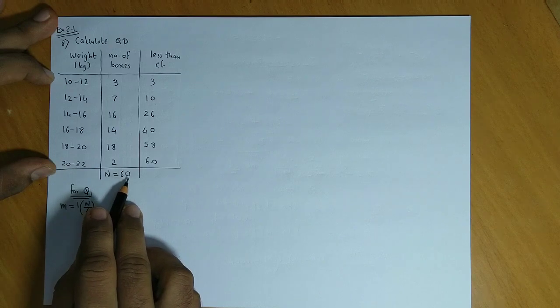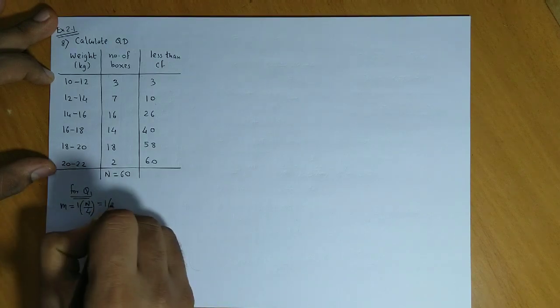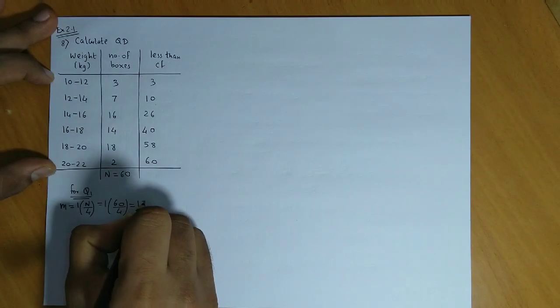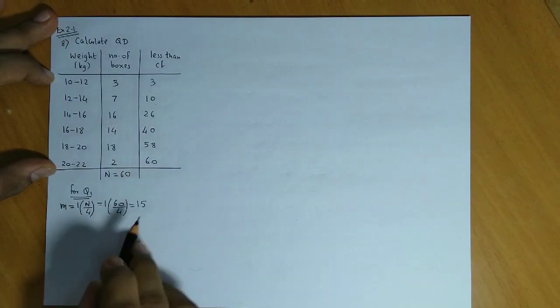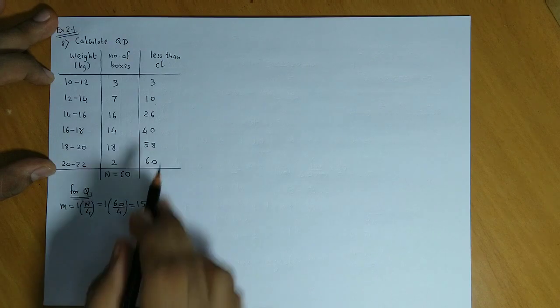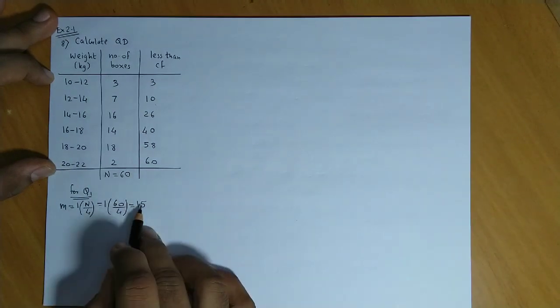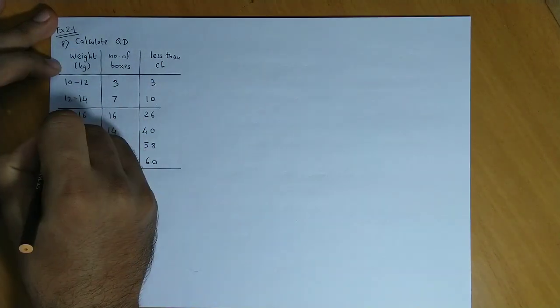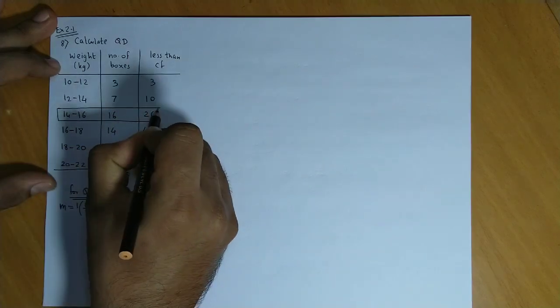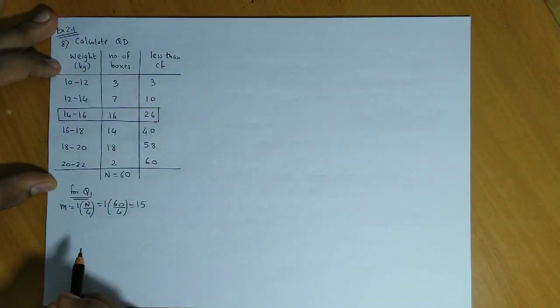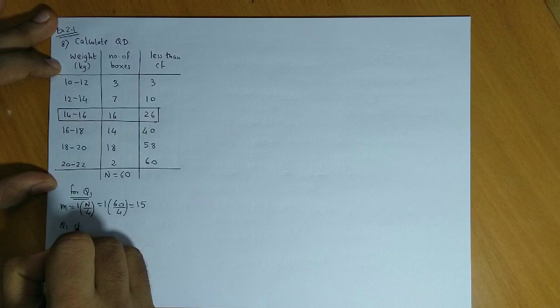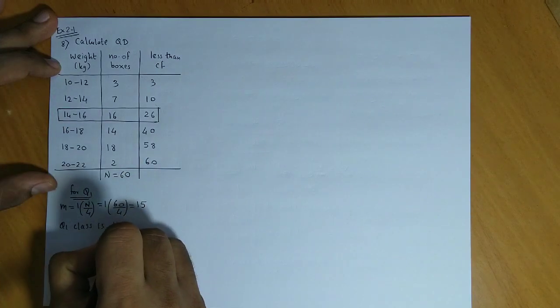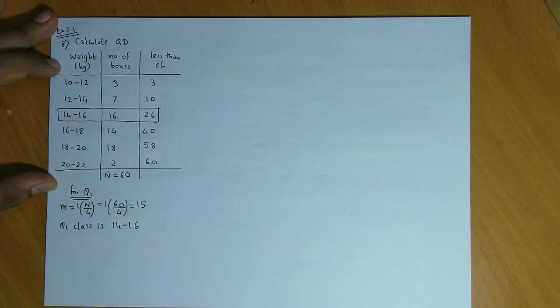N, the total frequency, is 60. So M = 1 times 60 by 4 equals 15. We locate this rank in the less than CF column. 15 falls after 10, so the Q1 class is 14 to 16.